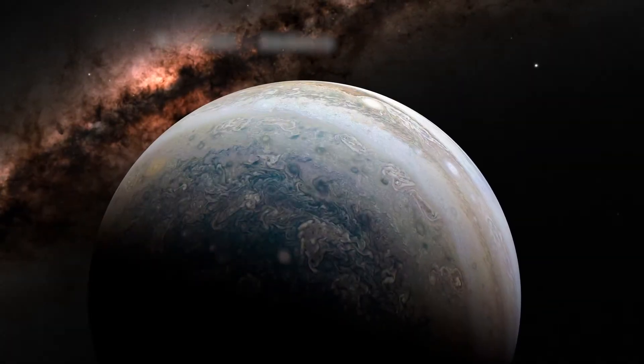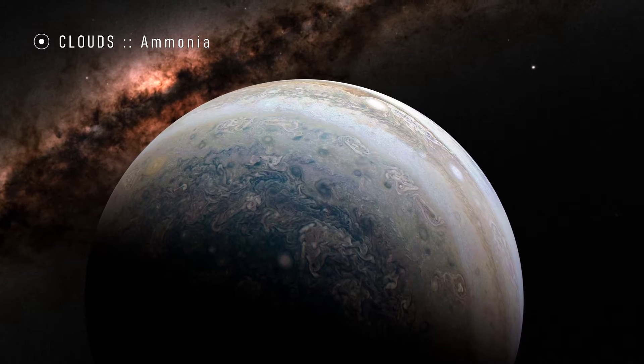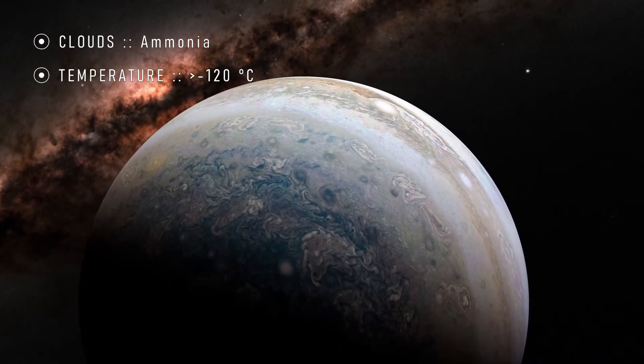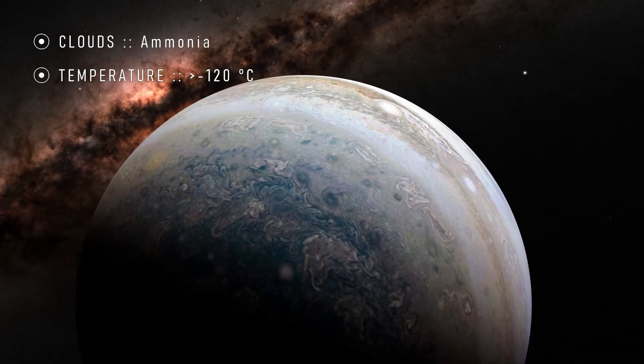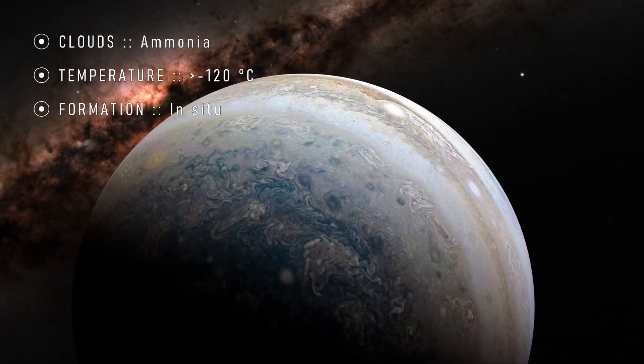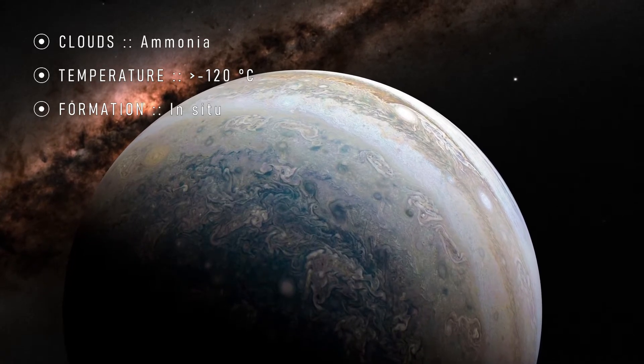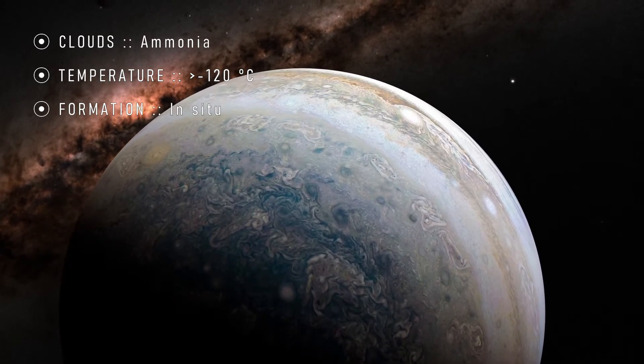Type 1 giants have an appearance dominated by ammonia clouds and have temperatures below minus 120 degrees Celsius. Sudarsky Type 1 giants require either a cool star or a distant orbit beyond the frost line. In our solar system, both Jupiter and Saturn classify as Type 1 giants.